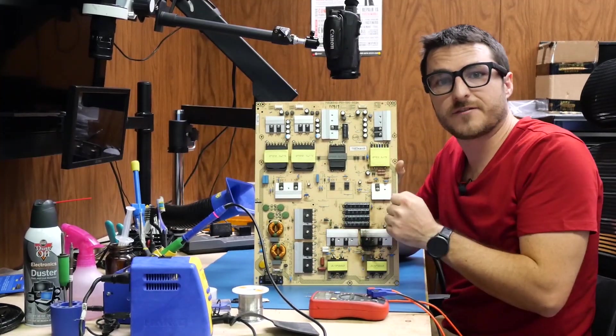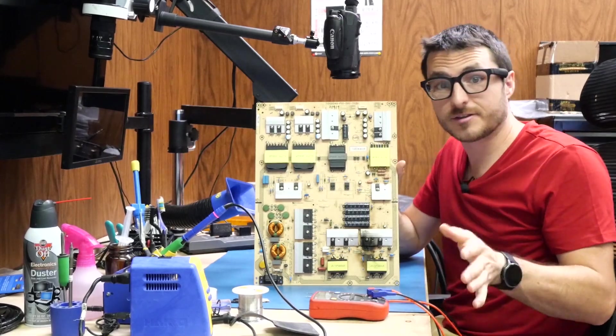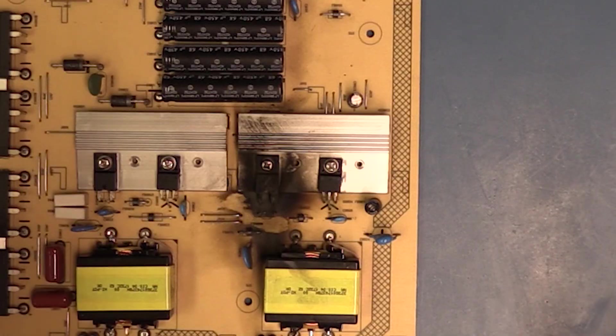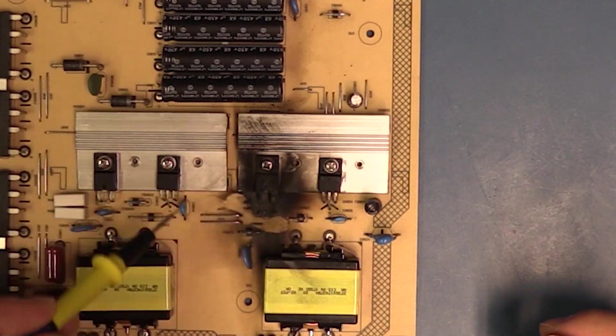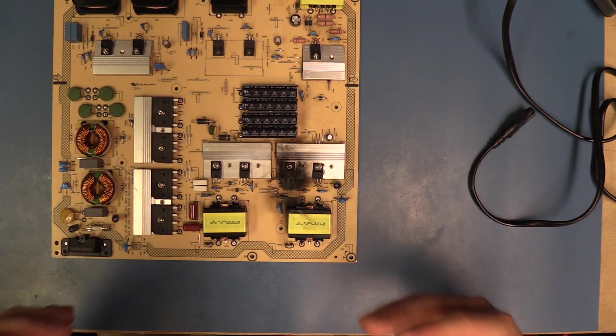A customer sent in the power supply for a Vizio M75-E1 claiming that everything worked except for the backlight. Despite the amount of damage on the board, it apparently is still turning on and does work except for the backlight.